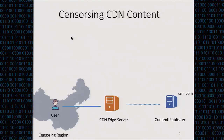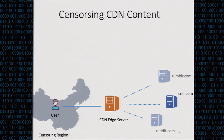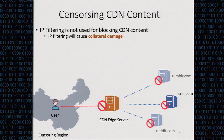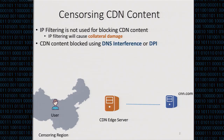Let's start by looking at why CDNs are special in the case of internet censorship. Say we have a website like cnn.com hosted on a CDN. A user making a connection would reach a CDN edge server that also hosts many other websites. If a censor blocks cnn.com by blocking that edge server, they effectively block all websites on that CDN. So censors avoid IP filtering for CDN-hosted content and instead use DNS interference or DPI inspection attacks.